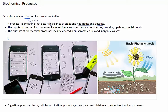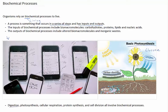For example, photosynthesis is a biochemical process. The inputs include carbon dioxide and water, and the outputs are oxygen, which is considered an inorganic waste product, and glucose. Other examples of biochemical processes include digestion, cellular respiration, protein synthesis, and cell division.